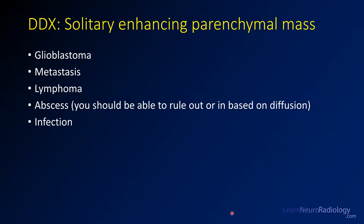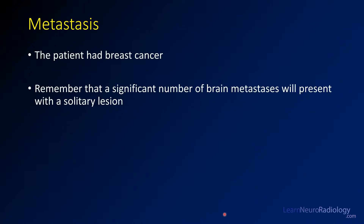For this case, think about your differential for solitary enhancing parenchymal masses: GBM, metastasis, and lymphoma. This is probably not an abscess because it was solidly enhancing. This turned out to be a metastasis — the patient had breast cancer. Remember that a significant number of metastases, probably 40 to 50 percent, will have only a solitary brain lesion, so don't rule out metastasis just because you see a single lesion.